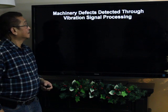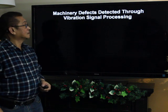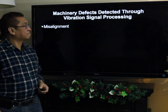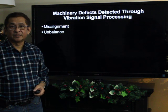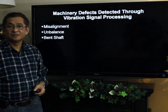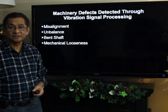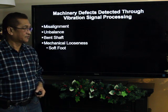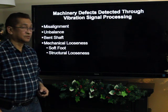There are seven machinery defects detected through vibration signal processing. The first one is misalignment, the second one is unbalance, the third one is bent shaft, and the fourth one is mechanical looseness. Under mechanical looseness, we have soft foot, we have structural looseness, and we also have wear or loose fitting.